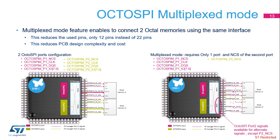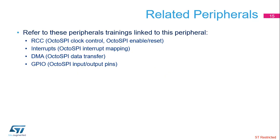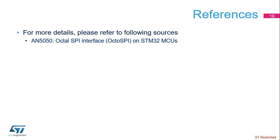Wearable applications require low power management together with high-quality HMI. This can be achieved using the STM32H7 OctoSPI interface to store in an external flash all the graphical content needed, like background images, high-resolution icons, or fonts to support multiple languages. Additional audio data for ringtones can also benefit from the large space offered by the external flash. The low pin count needed to drive such devices allows a very optimized system integration. You can refer to peripheral training slides related to RCC, interrupts, DMA, and GPIO for additional information. For more details, please have a look at application note AN5050 about the OctoSPI interface.